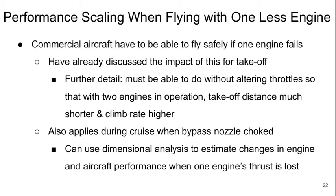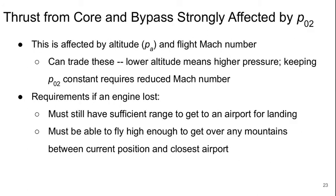The same idea applies during cruise when the bypass nozzle is choked. The thrust from the core and bypass are both strongly affected by P02, which is affected by both altitude and flight Mach number. We can trade these off. When we fly lower, we have higher pressure, so if we want P02 to be constant, we have to reduce the Mach number. The requirements if an engine is lost are that we still have to have sufficient range to get to an airport for landing, and we have to be able to fly high enough to get over any mountains between our current position and that closest airport.